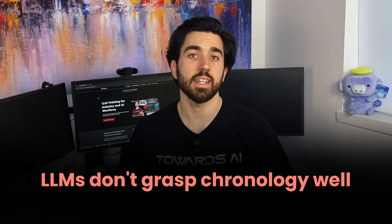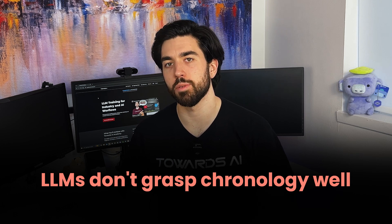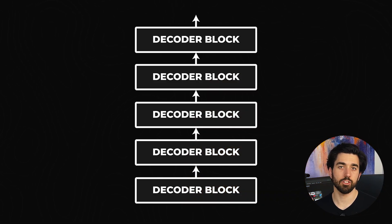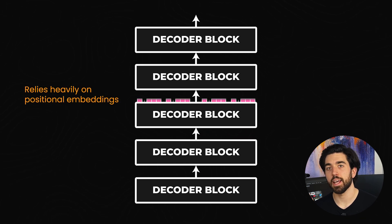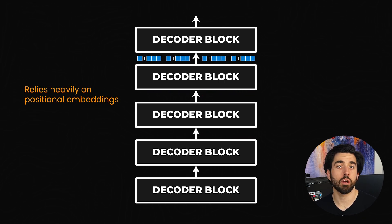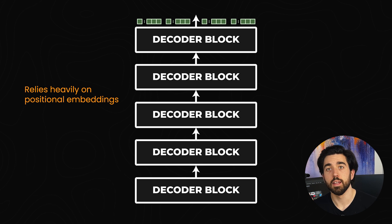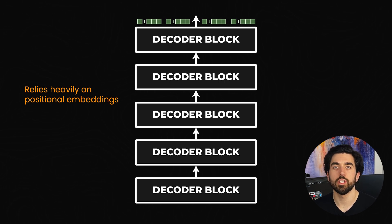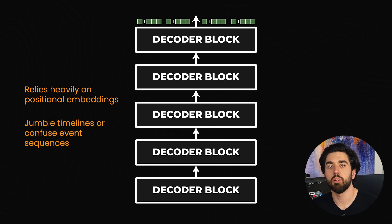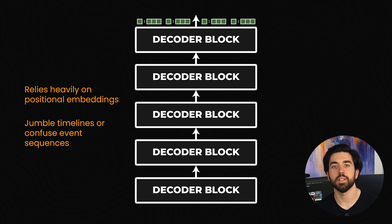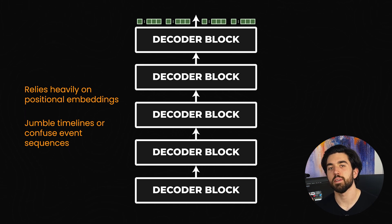Another thing is that LLMs don't grasp chronology particularly well. Transformers and the attention mechanism process information in parallel and rely heavily on positional embeddings to provide some sense of order. Yet this is a crude substitute for a genuine understanding of time and cause-and-effect relationships. LLMs frequently jumble timelines or confuse event sequences, which you may have experienced already. Just try to get a good 6-month training plan for a marathon and you'll see what I mean.